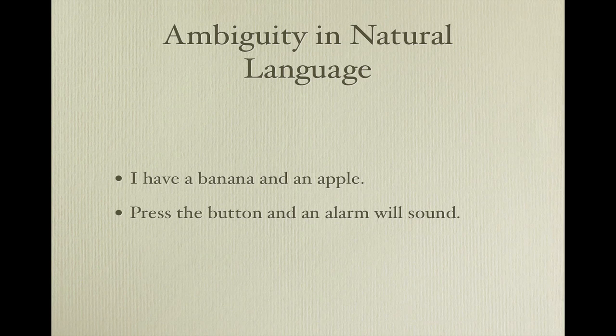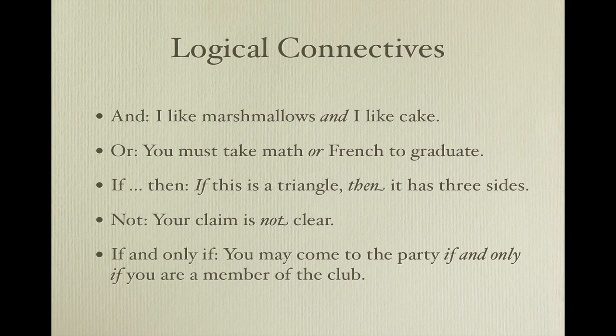One of the virtues to which logicians aspire is clarity. In order to achieve a high level of clarity in argument forms, we eschew natural language and instead use an artificial language. In this artificial language, we are only allowed to use the following words or phrases to express our argument forms, and they always have the same meaning. And — as in 'I like marshmallows and I like cake.' Or — as in 'you must take math or French to graduate.' If-then — as in 'if this is a triangle, then it has three sides.' Not — as in 'your claim is not clear.' And if-and-only-if — as in 'you may come to the party if and only if you are a member of the club.'